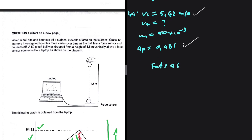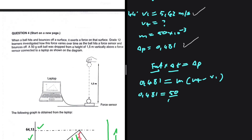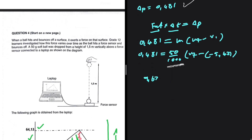F net multiplied by time equals the change in momentum. So 0.481 equals the mass multiplied by (VF minus VI): 0.481 equals (50/1000) multiplied by (VF minus minus 5.42). Dividing both sides by 50/1000, we get 9.62 equals VF plus 5.42. Taking 5.42 to the left-hand side, we get VF equals 4.2 meters per second upwards. That is our final velocity.